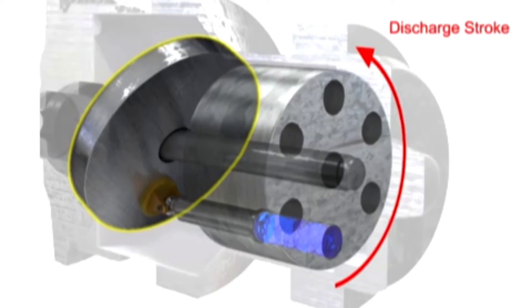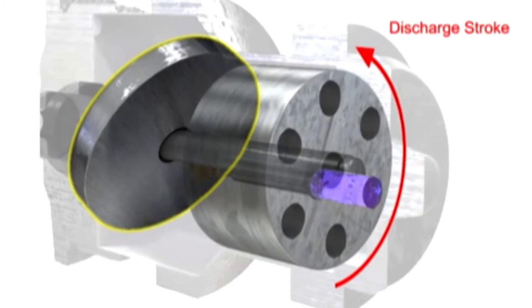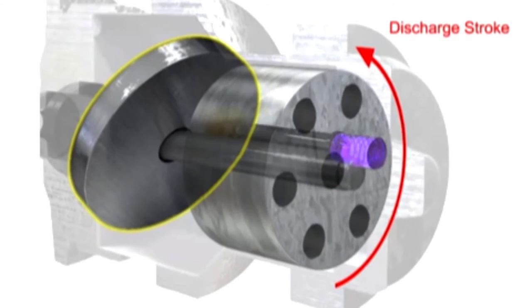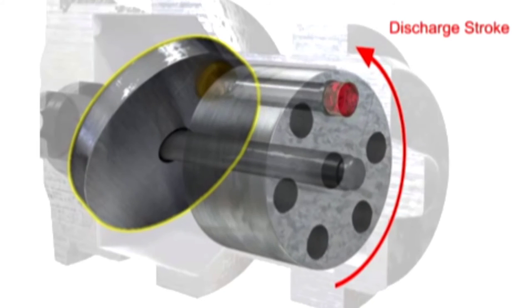On the discharge stroke, the angle of the swash plate forces the pistons back inside the piston block and discharges the fluid. The greater the slant on the swash plate, the further the pump pistons move and the more fluid they transfer.